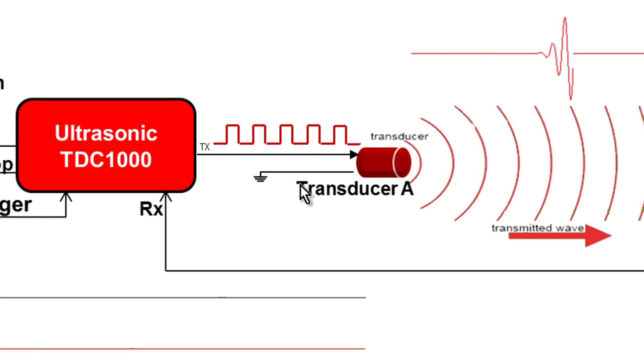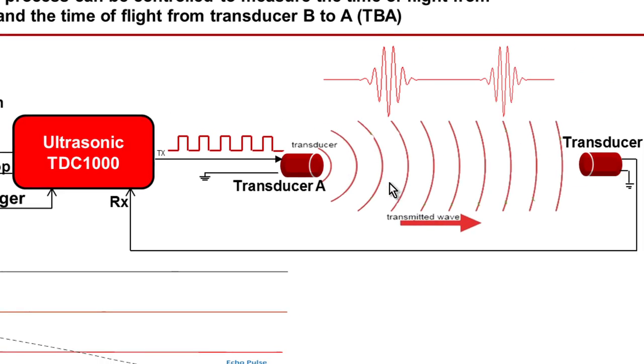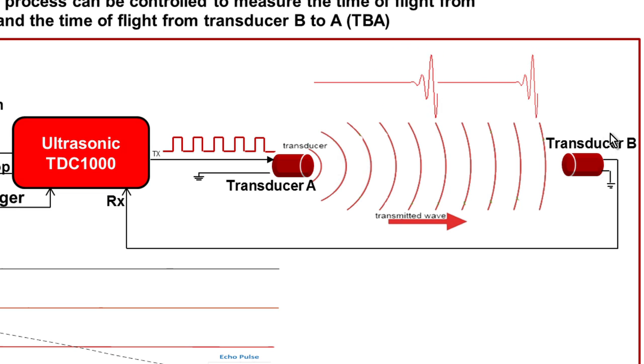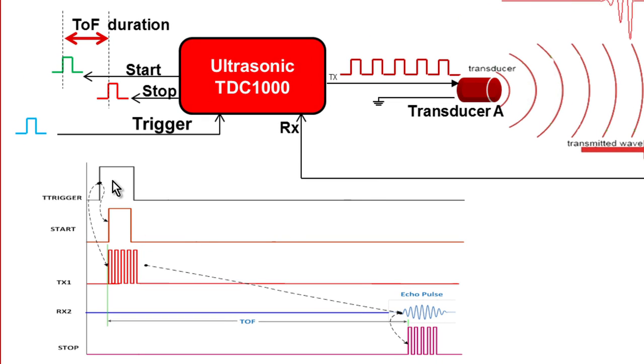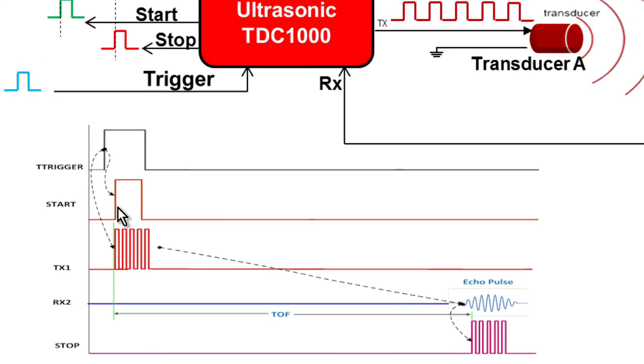This transducer is the transmitter. The energy is transmitted through the medium and received by the second transducer. The TDC1000, from its perspective, it's no difference.